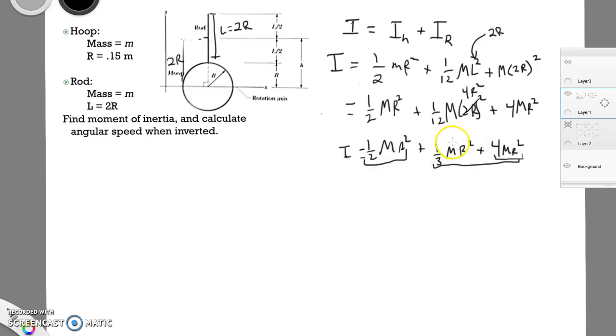So 1 half plus 1 third plus 4, 3 sixths plus 2 sixths is going to be 5 sixths. So that's 4 and 5 sixths MR squared for I. So we've completed the first part in finding the moment of inertia. All right, the next piece now would be to calculate the angular speed when inverted.